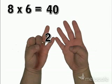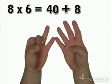On the left hand, we have 2 fingers standing. On the right, we have 4 standing. So that's 2 times 4, which is 8. So our result this time is 40 plus 8, or 48, which again is the correct answer.